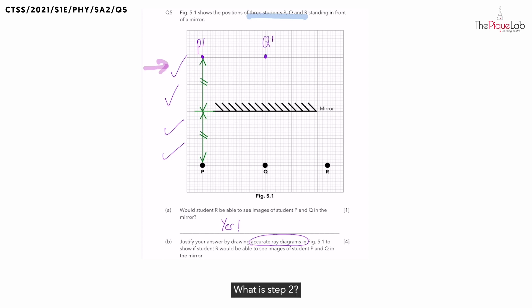What is step two? Step two is drawing the light rays from the image of student P to the eye of student R. Now since this image is not real, we need to draw the line behind the mirror dotted.